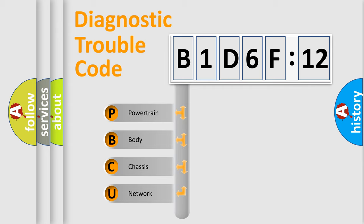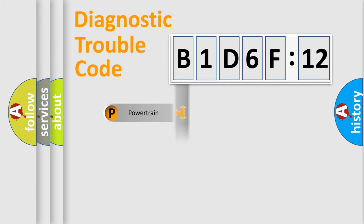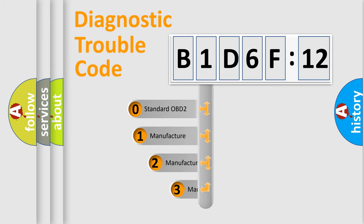We divide the electric system of automobile into four basic units: Powertrain, Body, Chassis, Network. This distribution is defined in the first character code.